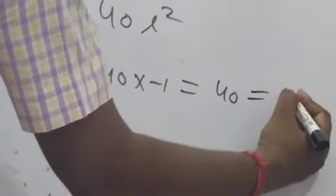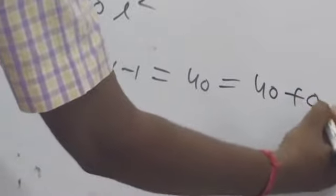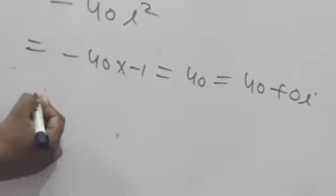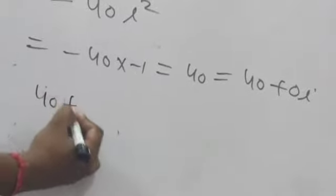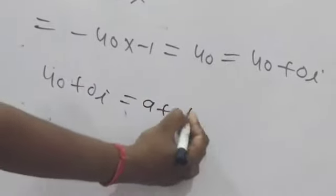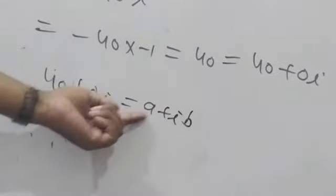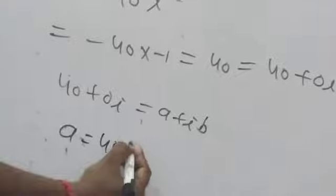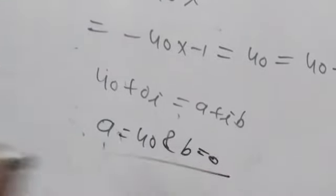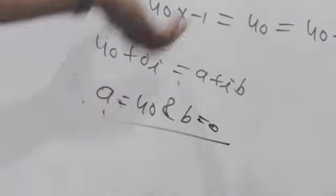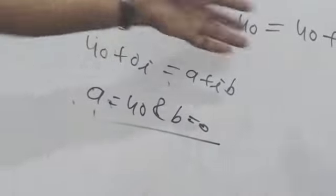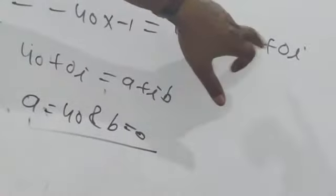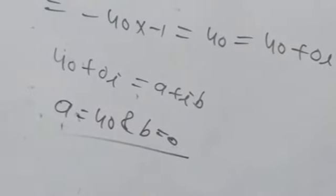Now this 40 we can write as 40 + 0i. Comparing with A + iB: A = 40 and B = 0. Therefore, after simplification, 40 is the real part and 0 is the imaginary part. This is very simple.